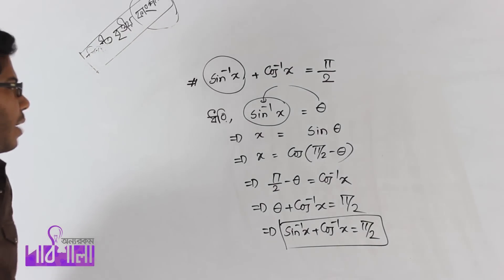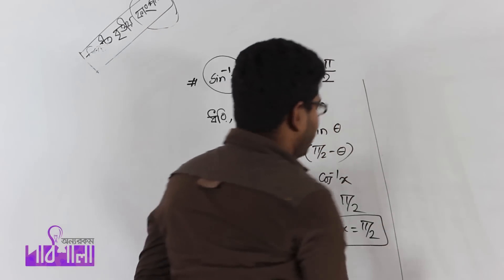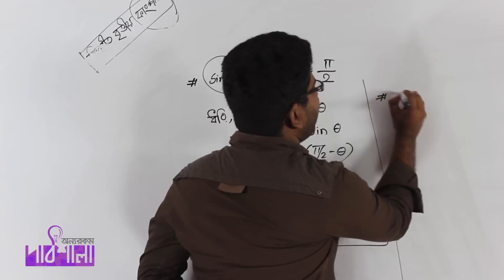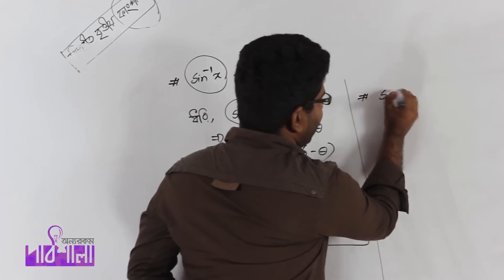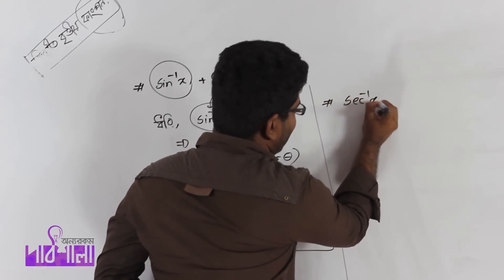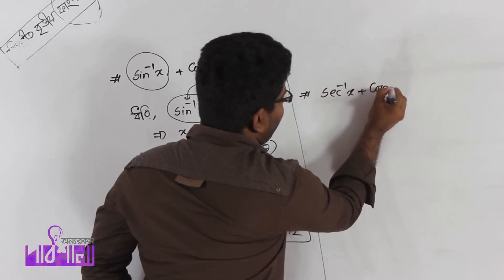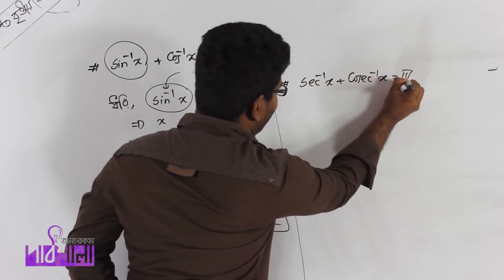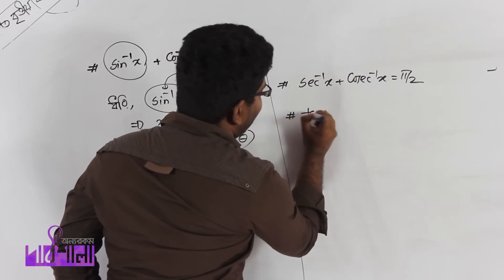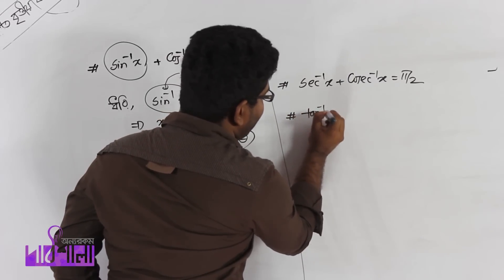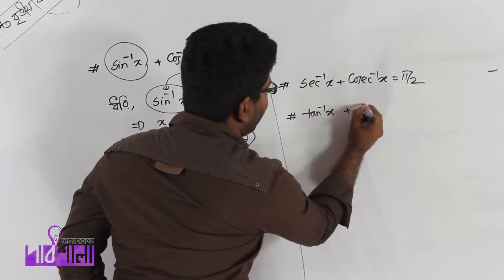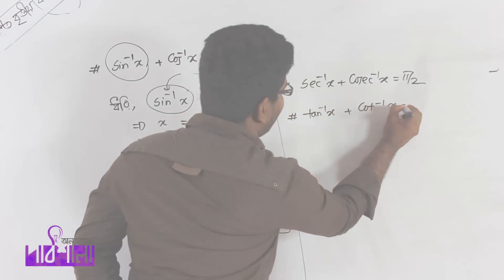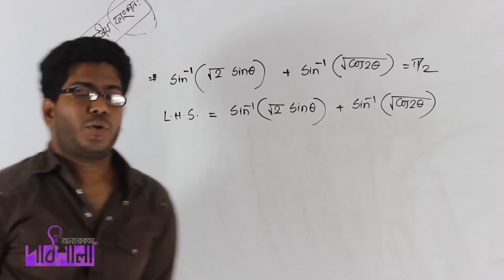Similar to that formula, another formula can be: sec inverse x plus cosine inverse x equal to pi by 2. And another one is: tan inverse x plus cot inverse x equal to pi by 2. Now let us move forward.